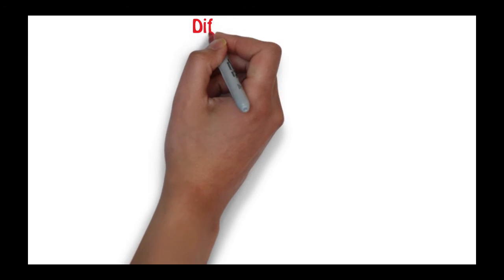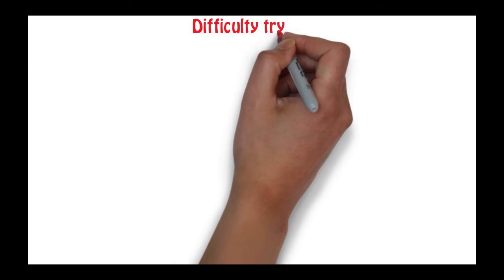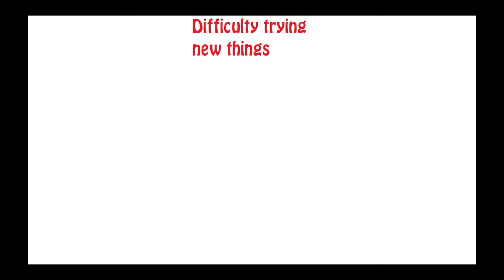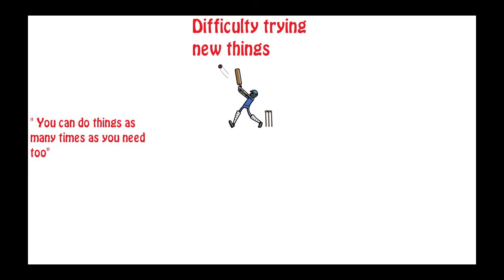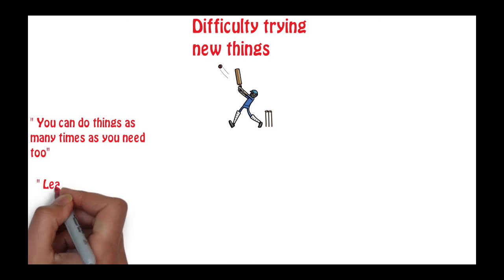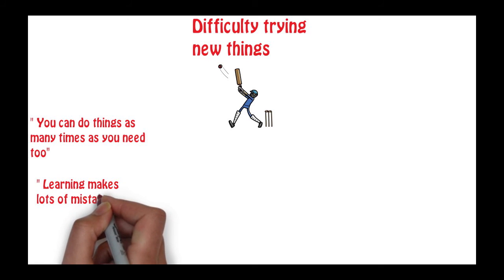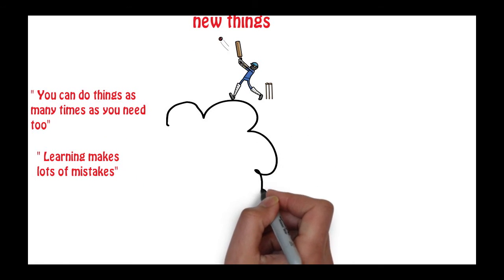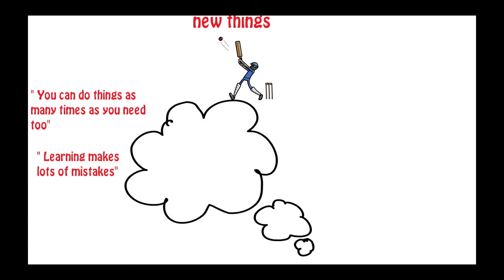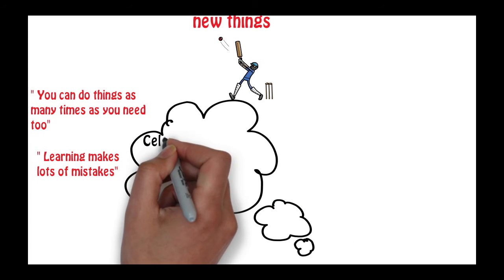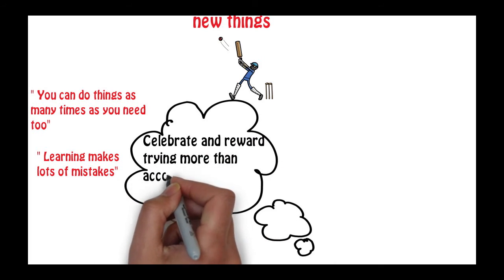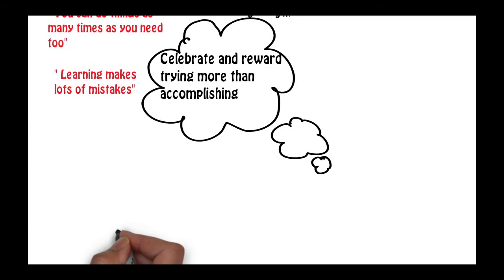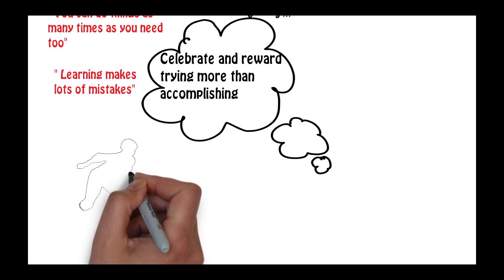The next behavior you may come across is a child that really has difficulty in trying new things. Some of the affirmations which I think are really key with this type of behavior are: you can do things as many times as you need to, and learning makes lots of mistakes. So one key strategy which is really important with this behavior is to celebrate and reward trying more than accomplishing, which I think is really important.